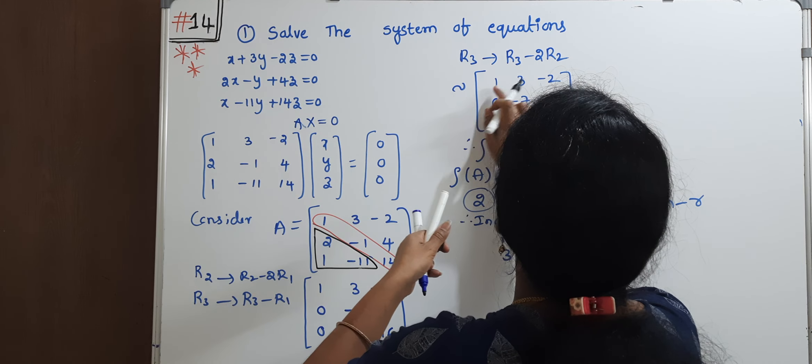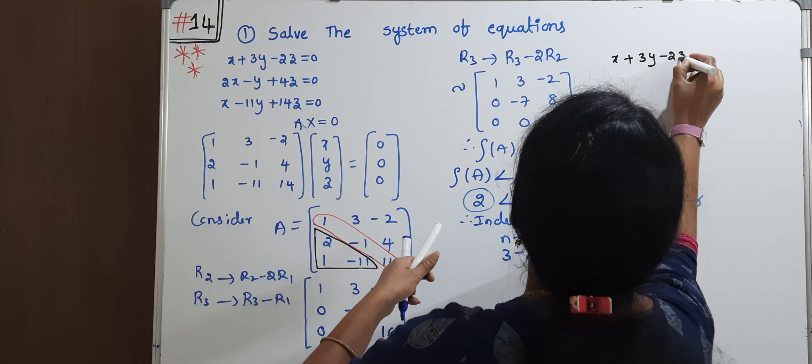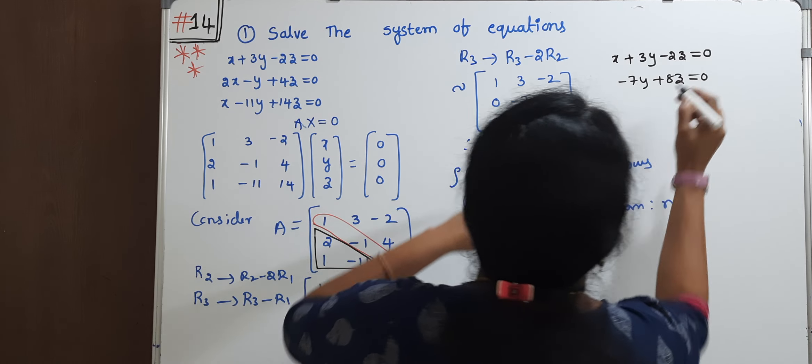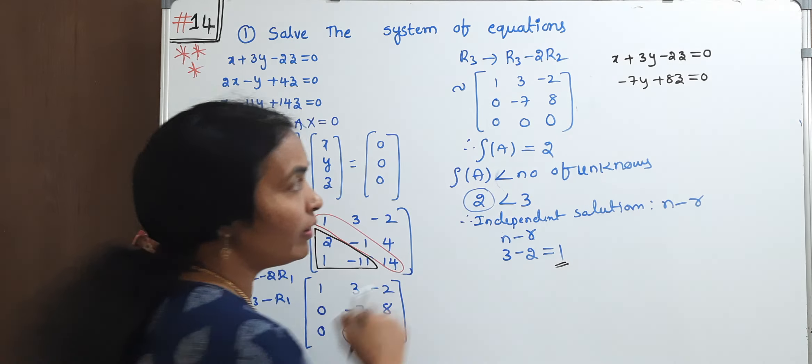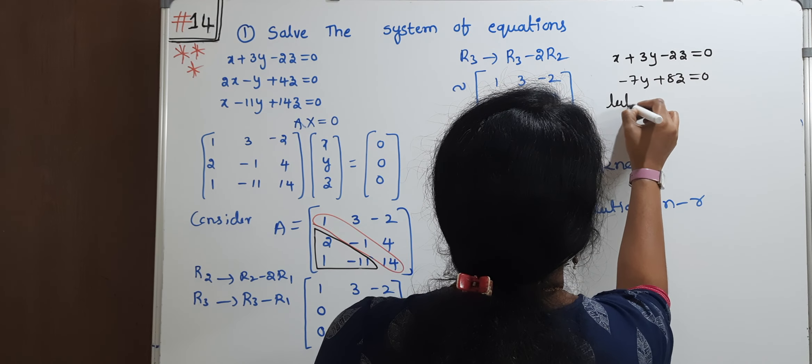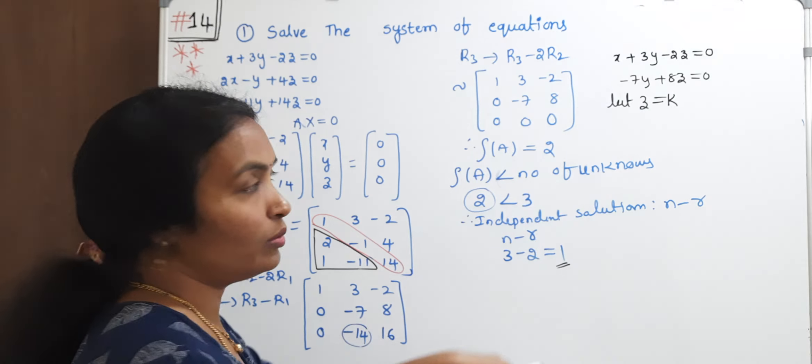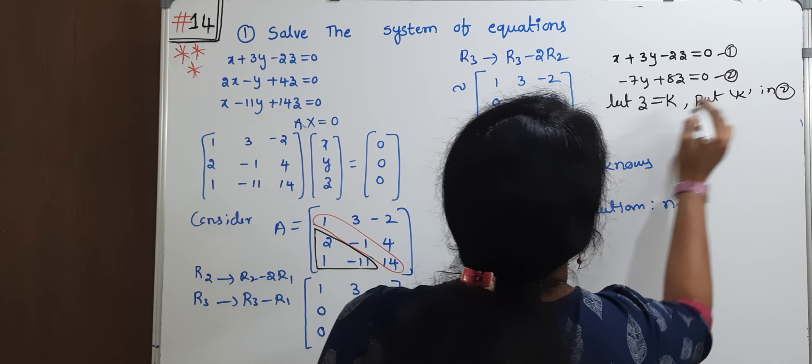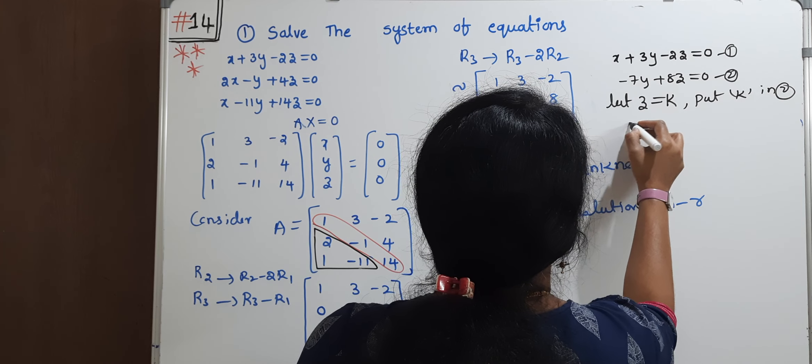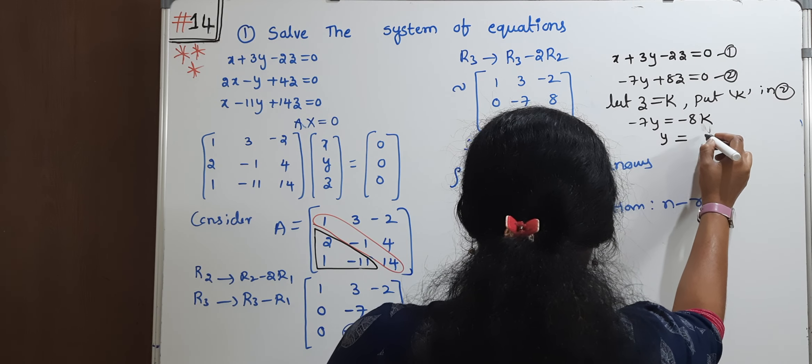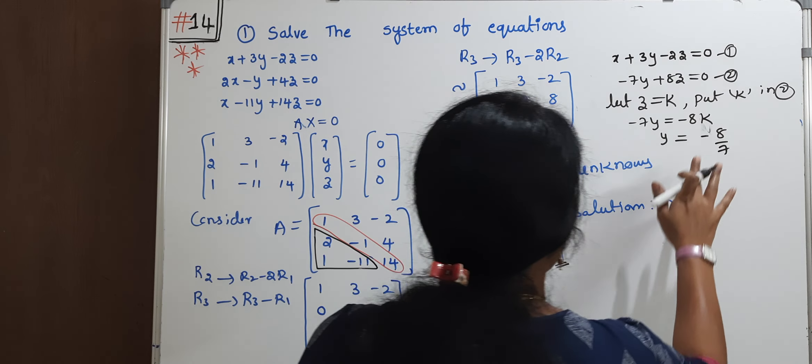Now I'll write the corresponding equation. -7y plus 8z equal to 0. But our independent solutions are 1. Either you may assume z is one variable or y is one variable. Let z is equal to k. Substituting k, -7y is equal to -8z. -8k. Then y is equal to 8 by 7k.